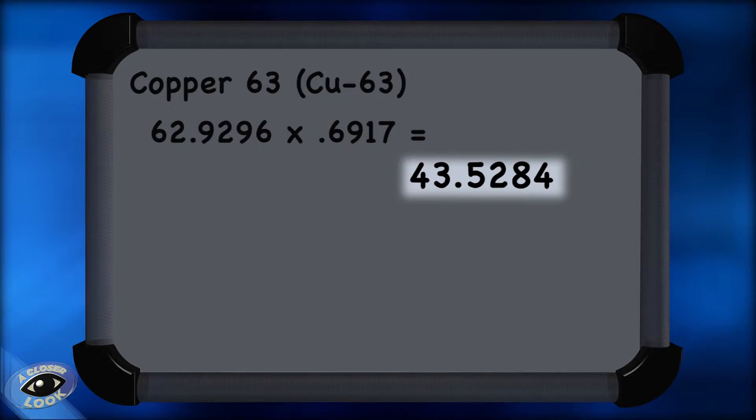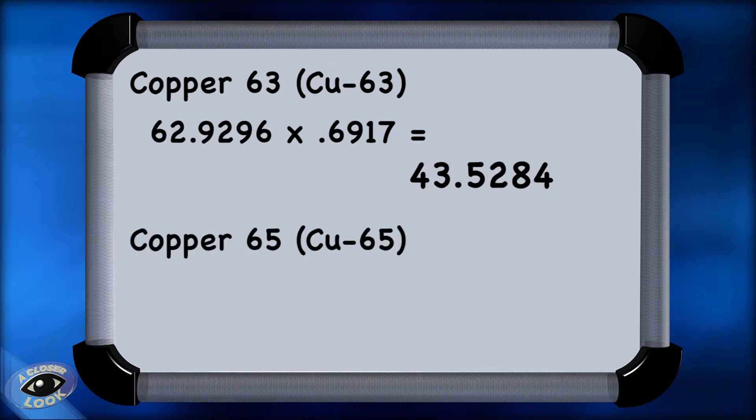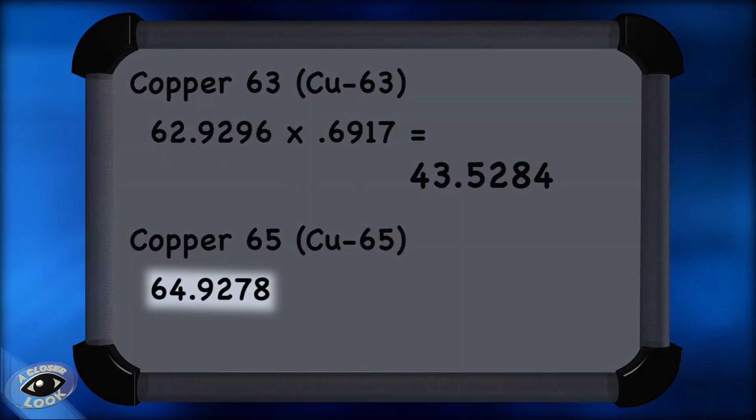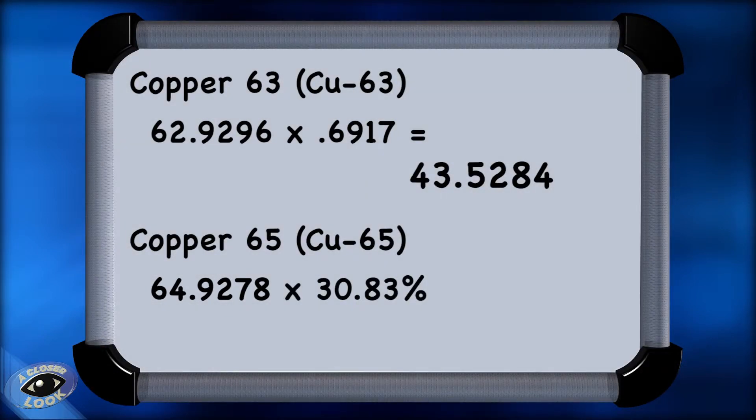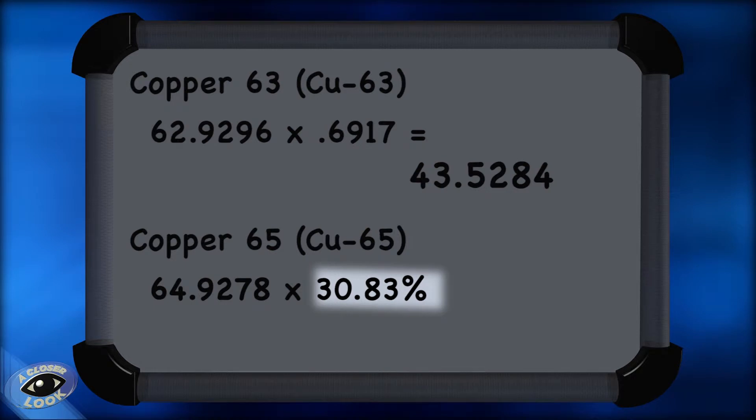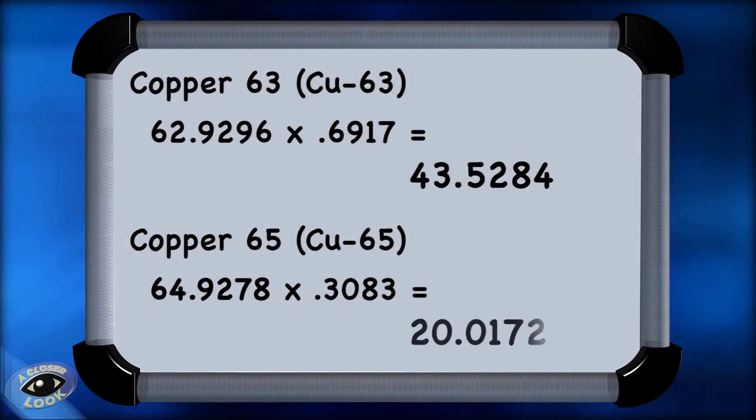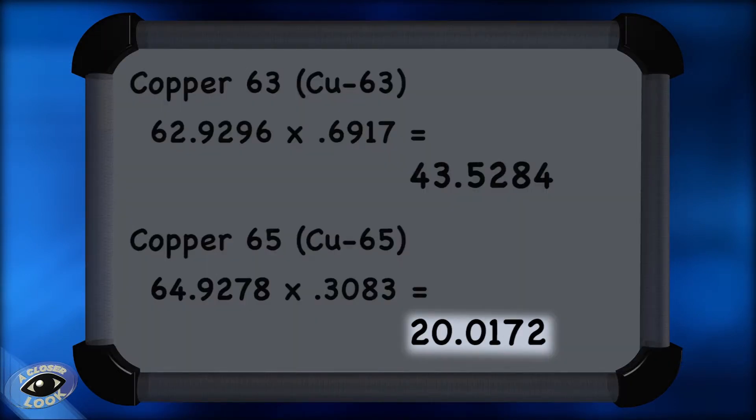We do the same thing with the next isotope, copper-65. We take the exact mass, which is 64.9278 AMU, and we multiply it by the percent abundance, 30.83%, which we write in decimal form as .3083. That gives us 20.0172.